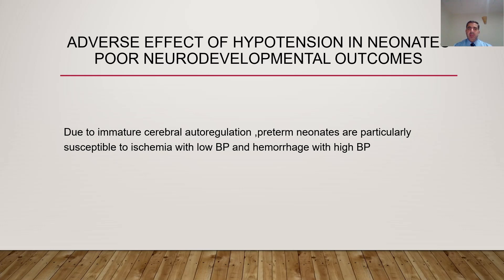Why are we concerned about hypotension? The most important effect is poor neurological outcome. Cerebral autoregulation normally maintains adequate cerebral circulation despite systemic hypotension, but this autoregulation is immature in preterm babies. During hypotension, the brain suffers decreased flow; during hypertension, it suffers increased flow. As a result, preterm babies are particularly susceptible to ischemia with low blood pressure and to hemorrhage with high blood pressure, resulting in poor neurodevelopmental outcomes.